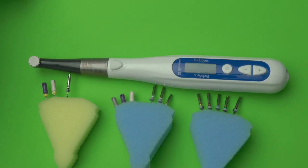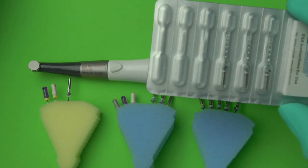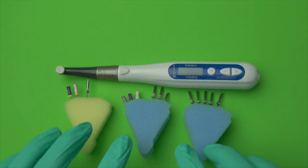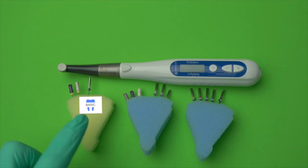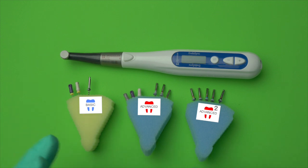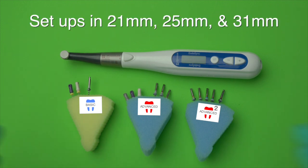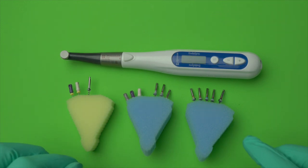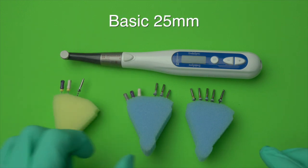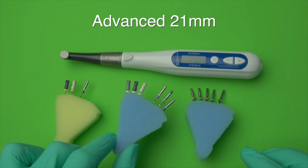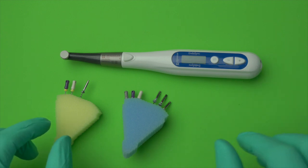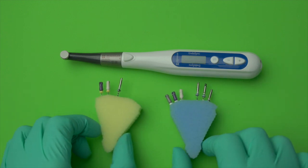The ESX files come in a package of three sterilized blister packs. We arrange these based on case difficulty level: basic, advanced, and advanced squared. We also have 21, 25, and occasional 31mm setups. Primarily, basic cases are going to be 25mm setups and advanced cases are going to be 21mm. Let's focus on the basic and advanced.